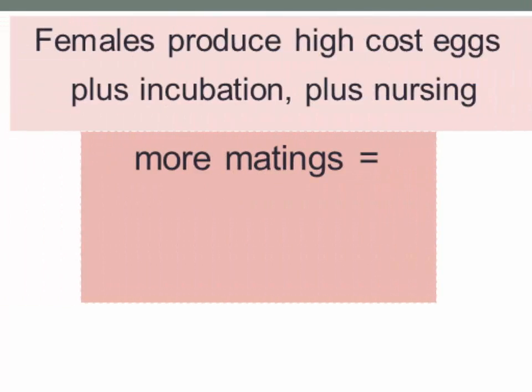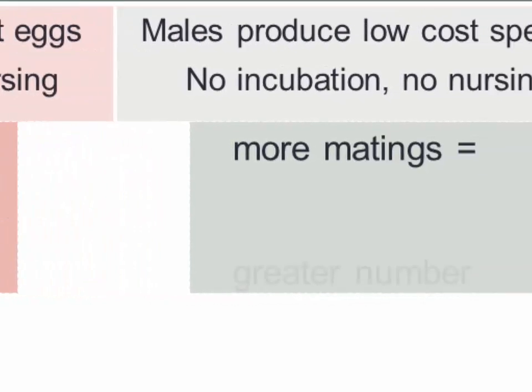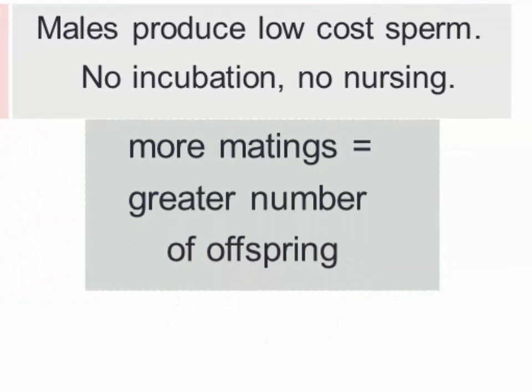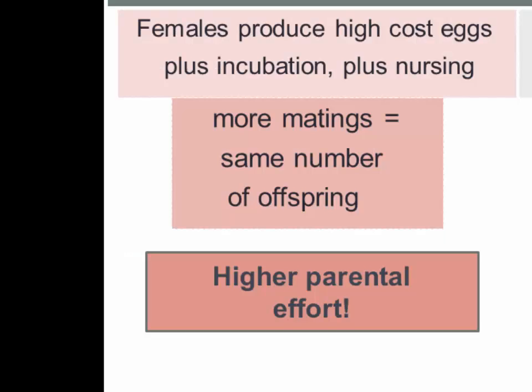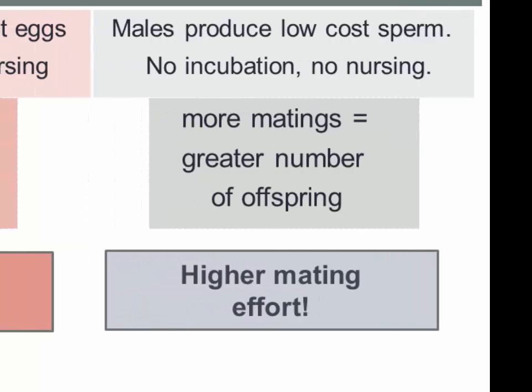There's another aspect to this that Bateman drew on: more matings for females will usually result in the same number of offspring, so females don't gain. The notion Bateman had, generally true in mammals, is that as females mate with more males, their reproductive success stays flat — they can only become pregnant so many times in a certain period. Whereas for males, more matings do turn into a greater number of offspring. The expectation then is that females will put more of their energy into parental effort, and males will put more effort into mating.